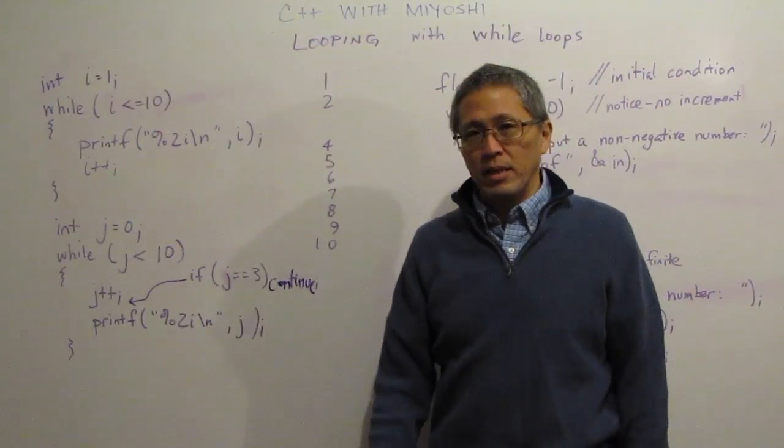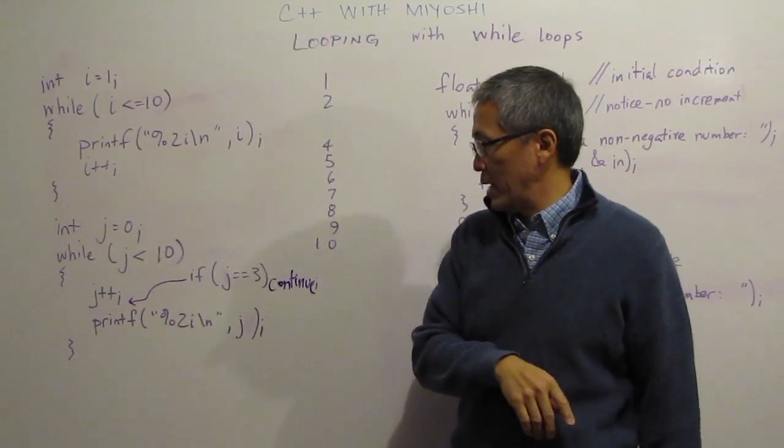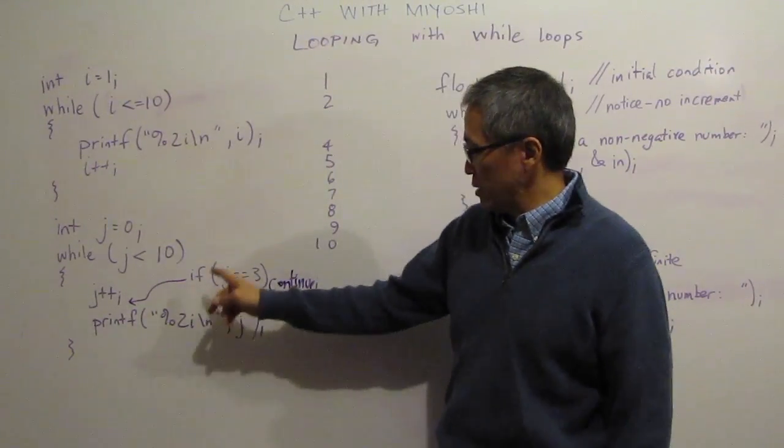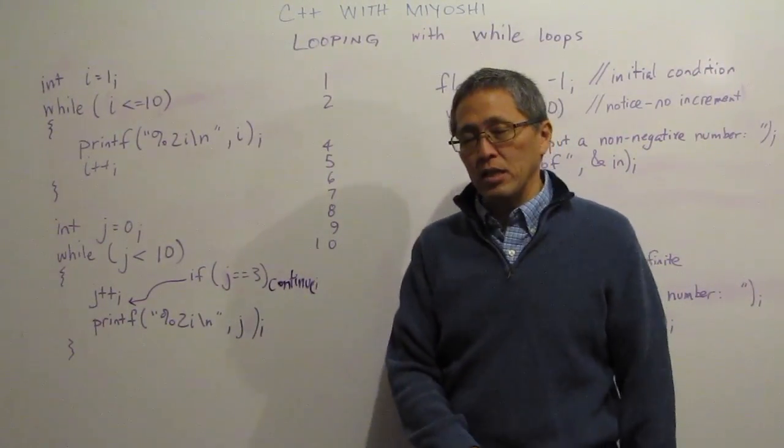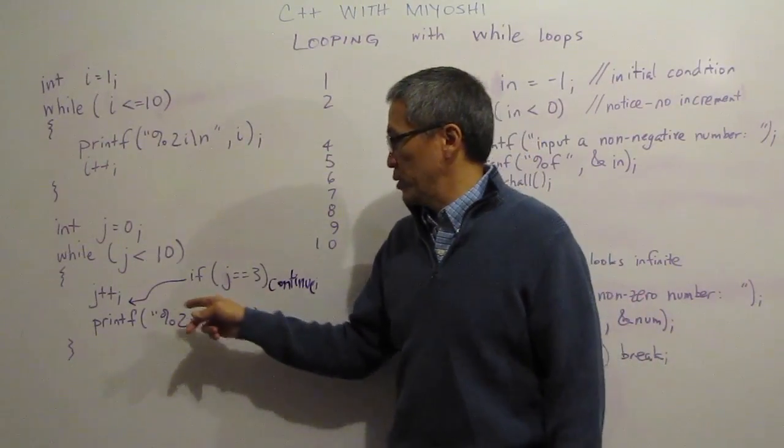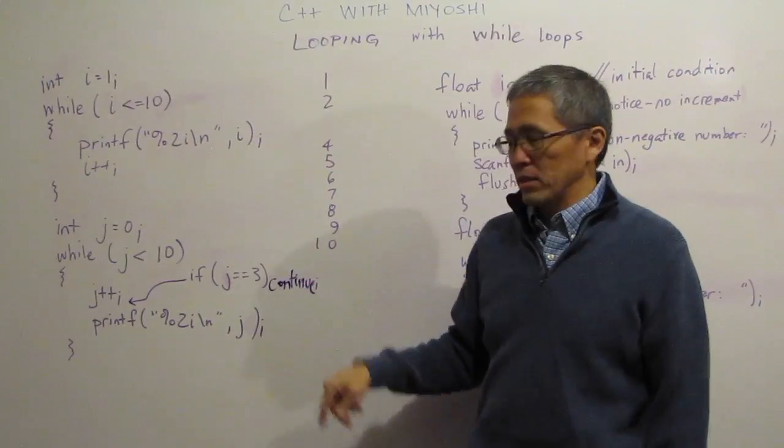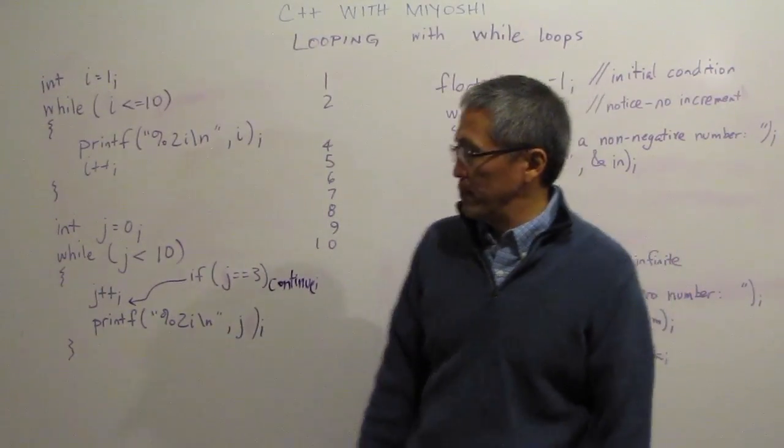These would all move up and it would be 1, 2, 4, 5, 6, 7, 8, 9, 10. Then it will drop out of my loop. So, just a little thing. Be careful with the continue. If you use continue in your loops when you do with a while loop, be careful because you may end up with an infinite loop when you didn't want one.